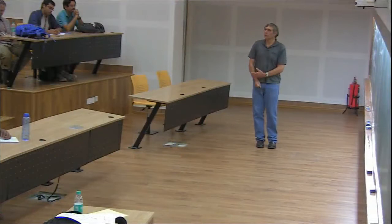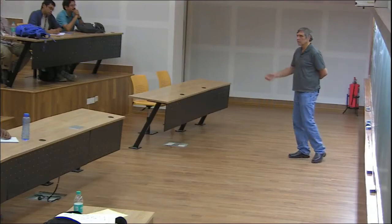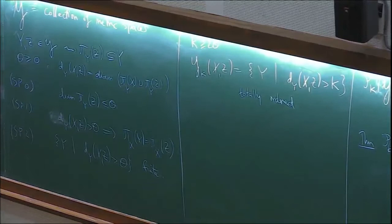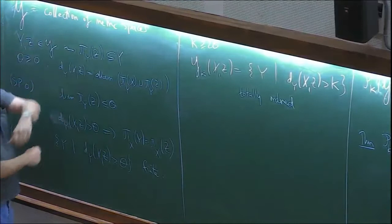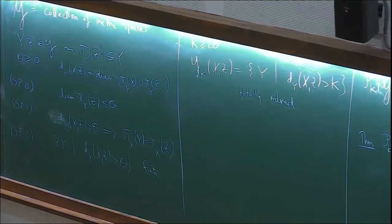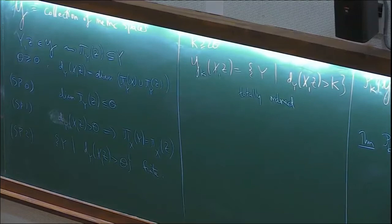So recall we have a collection of metric spaces — relating to Jason's lecture, this is some kind of a collection of curve complexes associated to a collection of subsurfaces, for example. Given two of these metric spaces, you have a notion of a projection. You can project one to another. In terms of these surfaces, you would want to know that any two of the subsurfaces you're given intersect — they overlap, they're not contained in one another, and they're not disjoint, because then projection would not be defined. And these properties here somehow encapsulate what the essential features of the projections are.